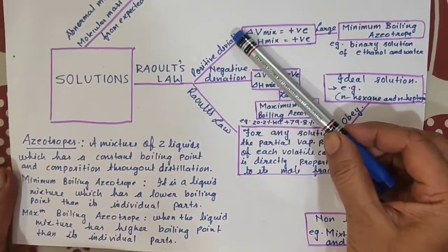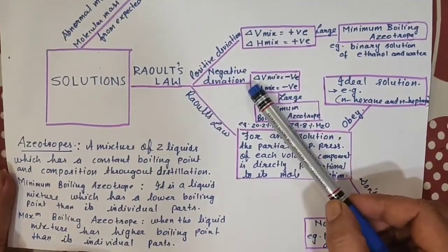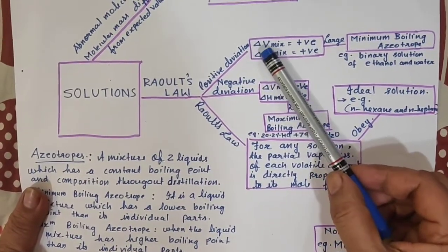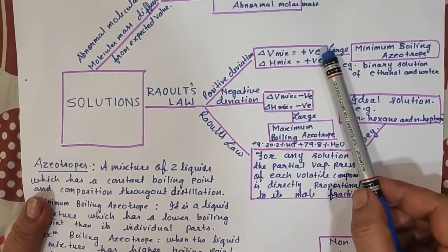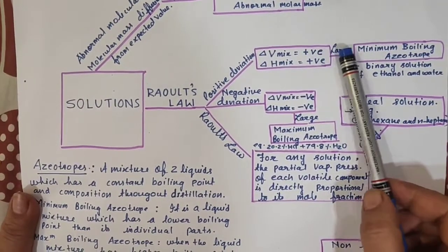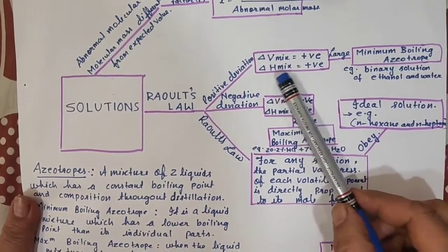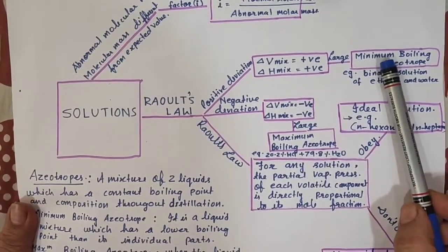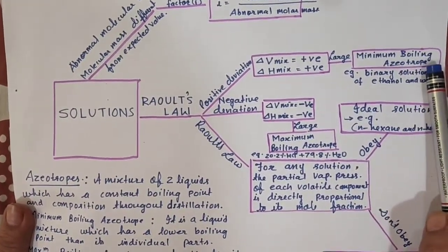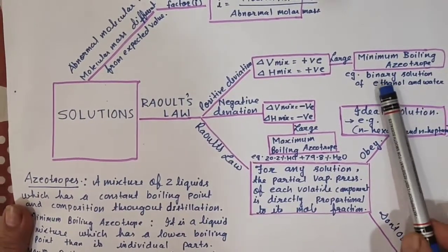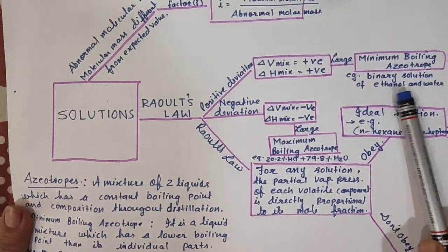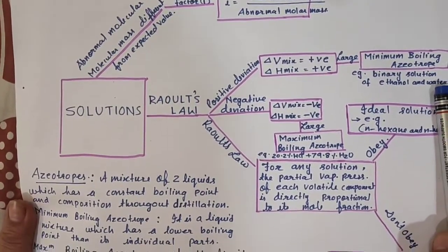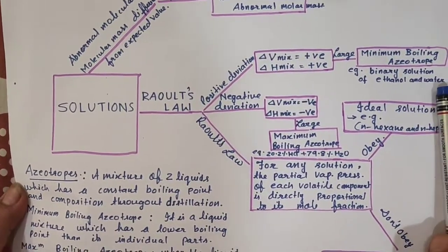Now what is positive deviation and negative deviation? Positive deviation means the delta V of mixture is positive, change in volume is positive. And enthalpy, change in enthalpy of mixture is also positive. And they will show minimum boiling azeotrope. Example? Binary solution of ethanol and water.